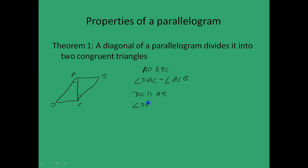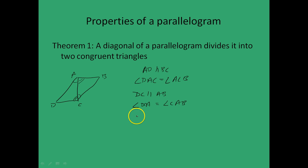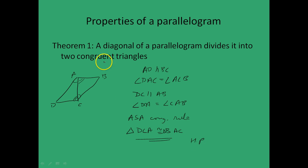So therefore, by the ASA congruence rule, triangle BCA is congruent to triangle DAC. Hence we have proved that a diagonal of a parallelogram divides it into two congruent triangles. You can use similar logic to prove that the other diagonal yields the same result.